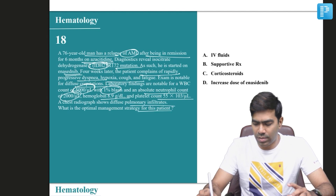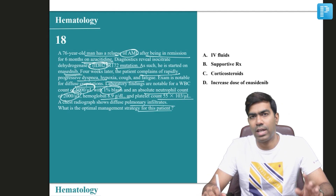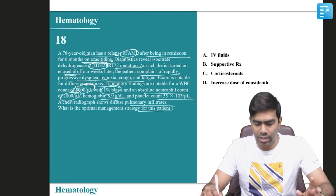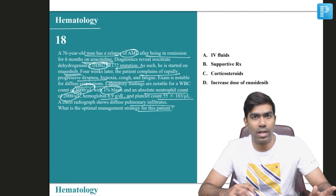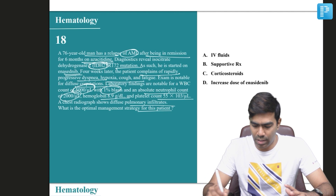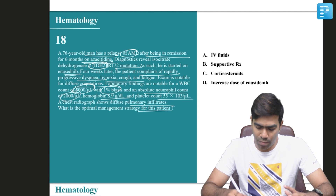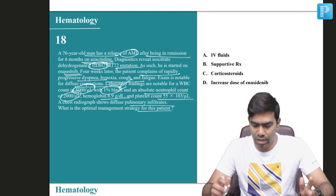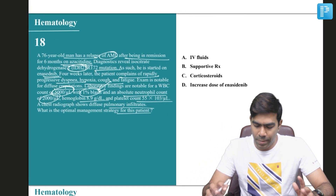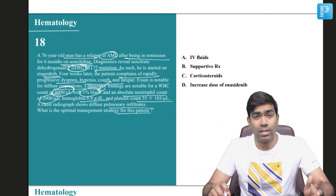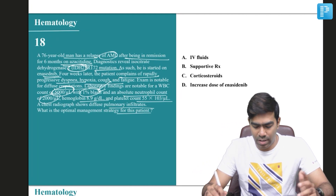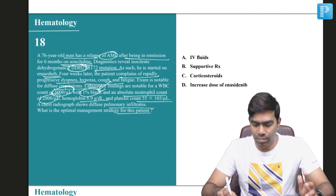What is the optimal management strategy? This is not AML progression, because after starting enasidenib, this patient has shown a good response and the blast count is very low in the blood. This patient has developed respiratory symptoms after starting enasidenib.